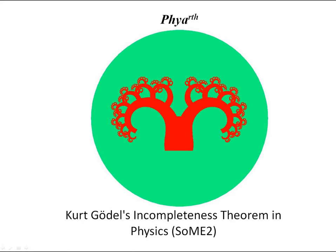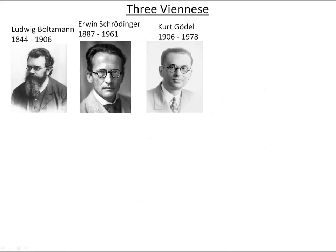Here we have three musketeers: Ludwig Boltzmann, Erwin Schrödinger, and Kurt Gödel. The last one is less known in circles of the scientific community, even though his theorem is the most important in whole mathematics and can be compared to the Pythagoras theorem.